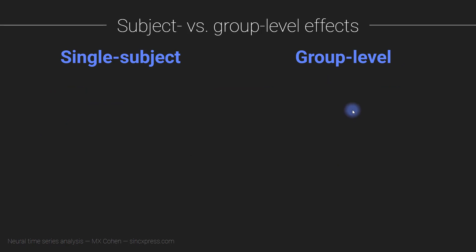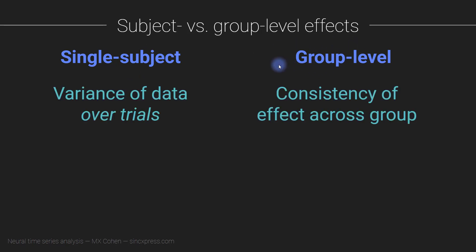We can now compare level 1 versus level 2 statistics directly. Single subject statistics look at the variance of the data over trials — if an effect has a lot of variance it may be non-significant. In contrast, group level effects focus on the consistency of the effect, meaning the average across different subjects, not the variance. So you can have a lot of within-subject variance, but if the means are all on the same side of zero, the group level effect will be significant.